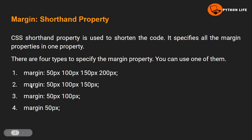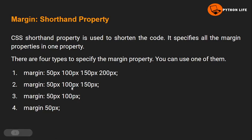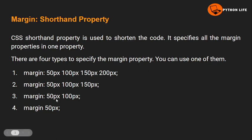Values can be in pixels or percentages. The second form uses three values: margin 50px 100px 150px. The third form uses two values. With two values, the first value is top and bottom, and the second value — 100 pixels — applies to left and right. With one value, margin 50px applies to all four sides.